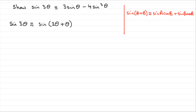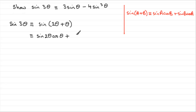So this is going to turn out to be the same as sine of a — a being 2θ — times cos b, but b is θ, so that's cos θ, plus sine b, so that would be sine of θ, times cos of a.